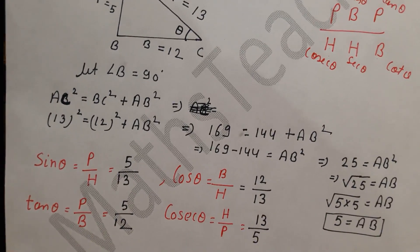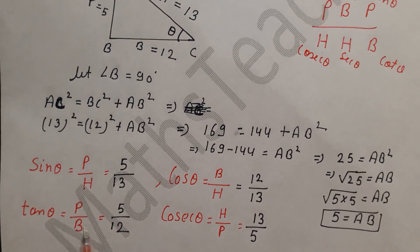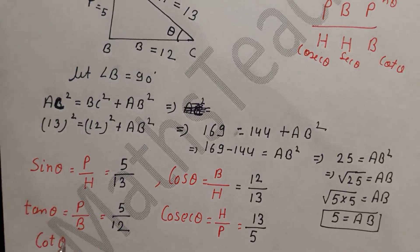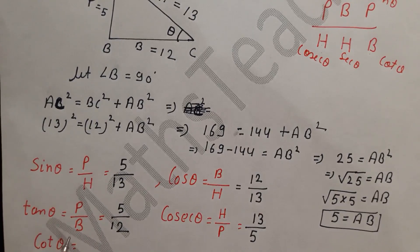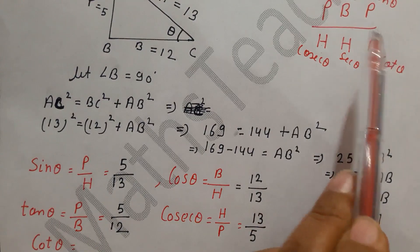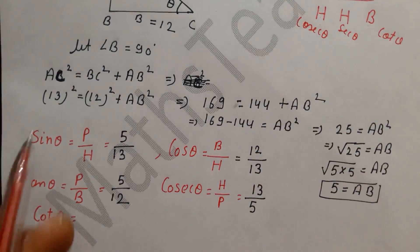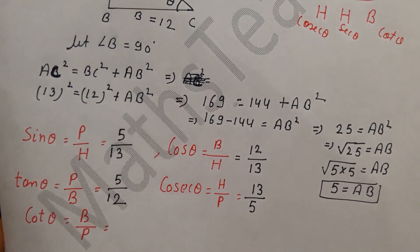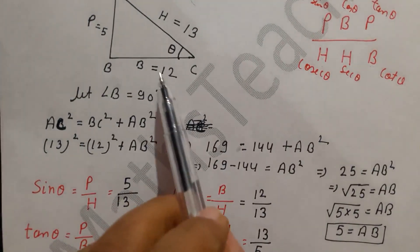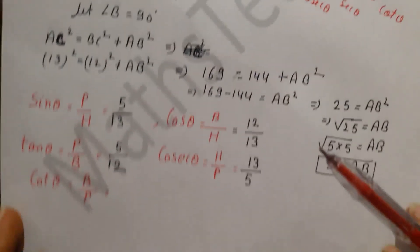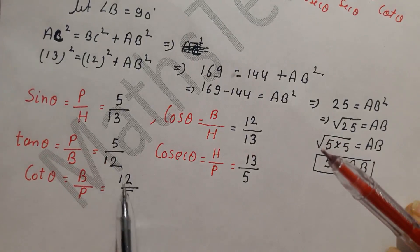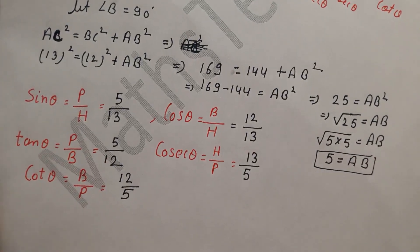Now the last values: cosec theta equals H upon P, so cosec theta equals 13 upon 5. Cot theta equals B upon P — cot is the reverse of tan — so looking at the triangle, base is 12 and perpendicular is 5, giving cot theta equals 12 upon 5. So tan is 5 upon 12 and cot is 12 upon 5.